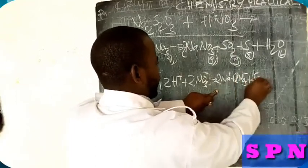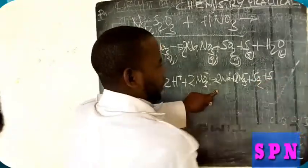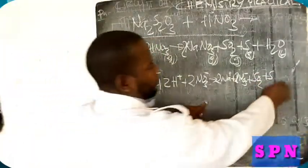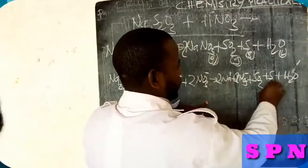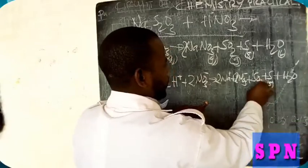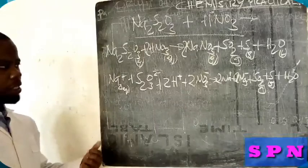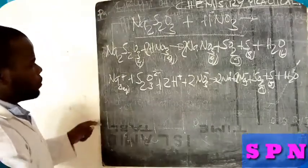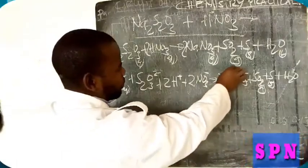Plus sulfur dioxide, which is not a precipitate, less sulfur, then plus water. Then we're going to find spectator ions, which is going to be sodium and nitrate.